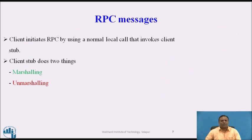RPC Messages: The client initiates RPC using a normal local call that invokes the client stub. The client stub performs two operations — marshaling and unmarshaling. Marshaling means packing the specification of the target procedure and arguments into a message and sending it to the RPC runtime. Unmarshaling means unpacking the result and passing it to the client.